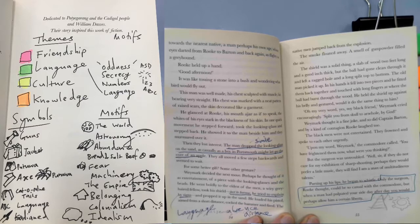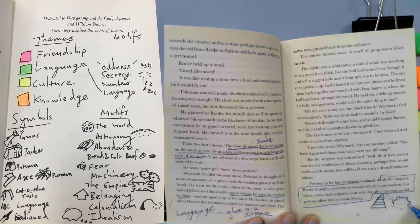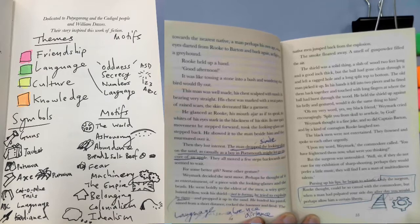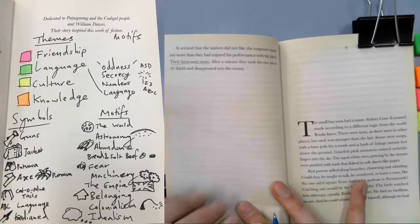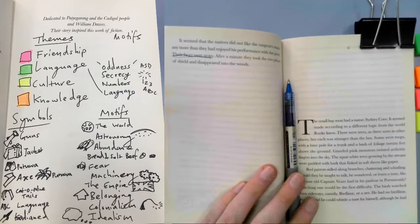Page 55, only the surgeon, Rook thought, could be so casual with the Commodore. But when a man had palpated your side day after day, you would perhaps allow him a certain liberty. So palpated basically just means if you imagine someone giving resuscitation, sort of pressing on. To palpate is to vibrate, to press. So because of his disease or illness, the surgeon has been pressing on his side quite often. And then 56, to finish up, their faces were stony. Which is, of course, foreshadowing of the difficult interactions that will occur.